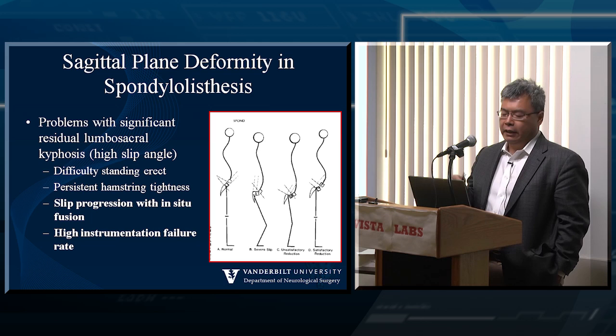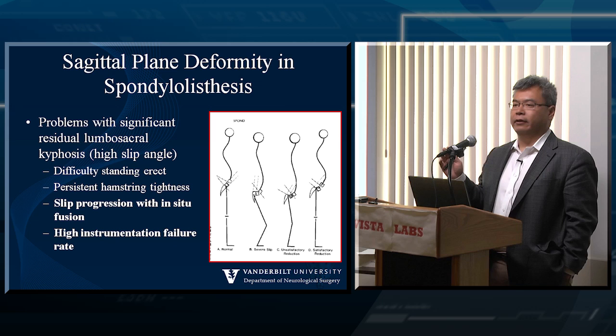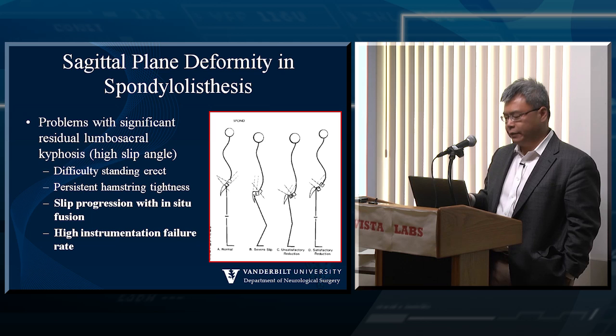The sagittal plane deformity of spondylolisthesis is also huge. Patients with a high slip angle are those you see with almost loss of kyphosis in the thoracic spine. They're trying to compensate so much that they bend their back this way — their butt's sticking out, their back's arched back. That's a different patient than someone who is compensated overall.